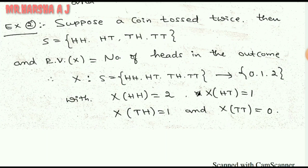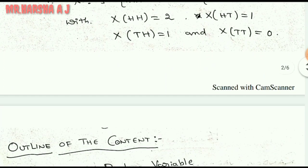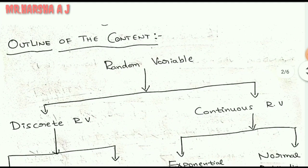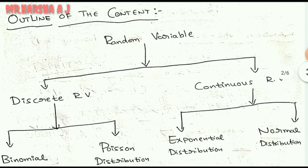Remember, if the values are repeated, no need to write them again. Here I have written 0, 1, and 2 — actually 1 repeated twice but I have not written it again; writing once is sufficient. I hope you understood the definition of random variable. Now before going to the content, let us first remember the outline of this entire module, because many students confuse the distributions.